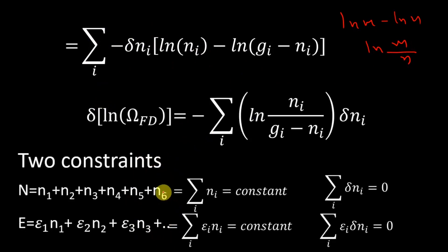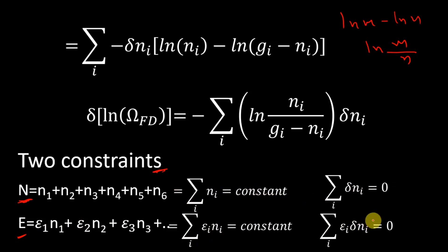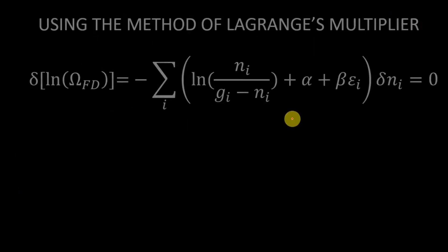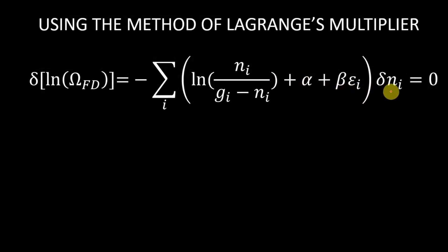Now we apply the constraints as in Maxwell-Boltzmann and Bose-Einstein statistics. We have two constraints: total number of particles is constant (sum dN_i = 0) and total energy is constant (sum E_i·dN_i = 0). Using the method of Lagrange's multipliers, we multiply the first constraint by alpha and the second by beta, then add them to our expression. Taking dN_i common gives us the combined equation.